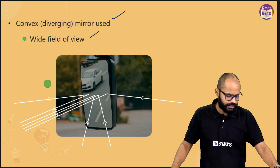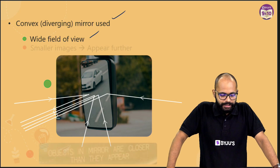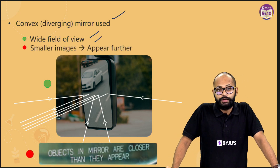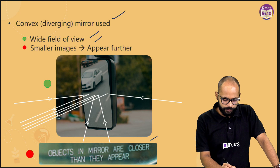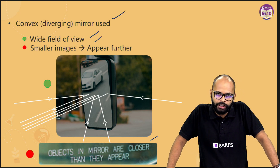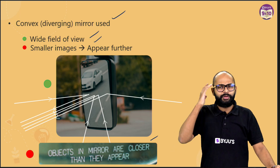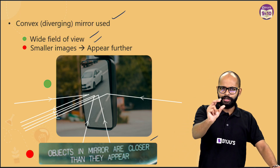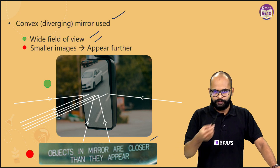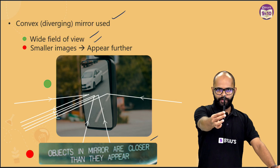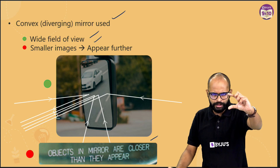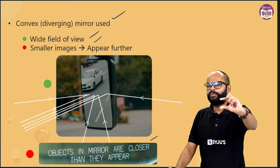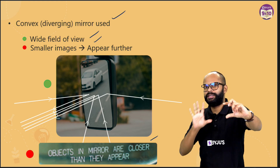A convex mirror gives you smaller images that appear further away. You might have noticed the warning on mirrors: objects are closer than they appear. The brain has a tendency — if something looks smaller, you feel it is far from you. So if you see a smaller image, you think it is far, even if in reality it is closer. This is one problem we need to be aware of.